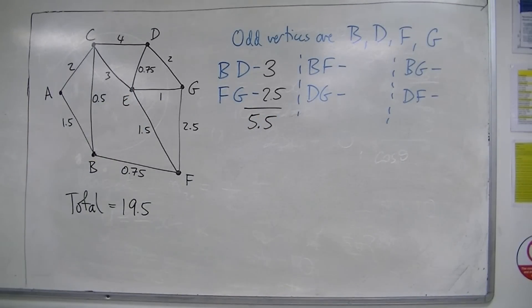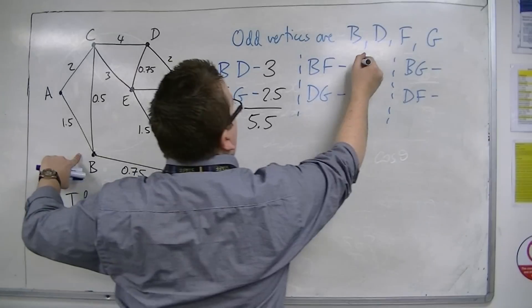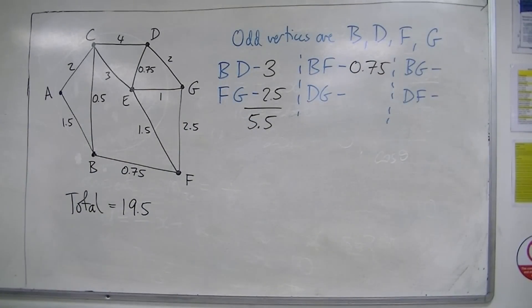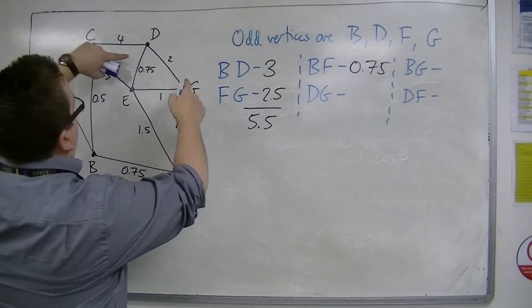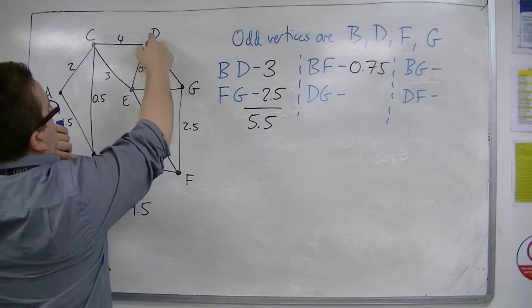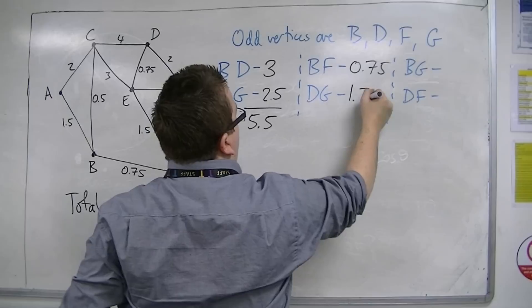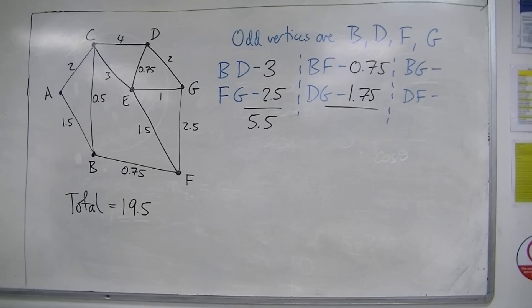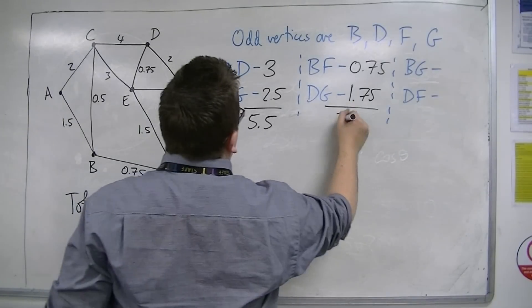Now we've got B to F, so B to F is 0.75. And then D to G, we've got 2, or we've got 1.75 there, so 1.75. So together, 1.75 and 0.75 make 2.5.